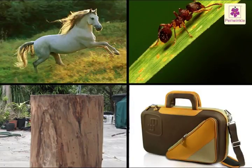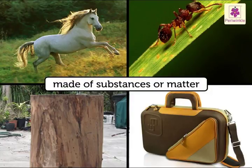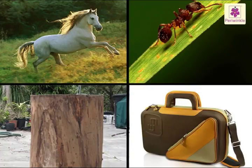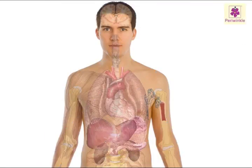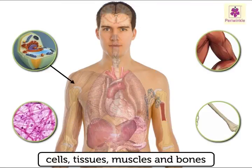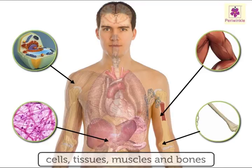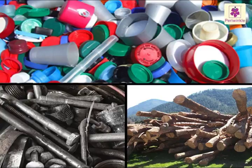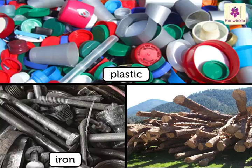Both living and non-living things are made of substances or matter. Living things are made of cells, tissues, muscles, and bones. Non-living things are made up of substances like plastic, iron, and wood.